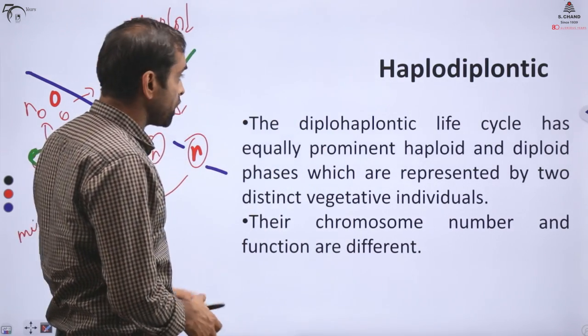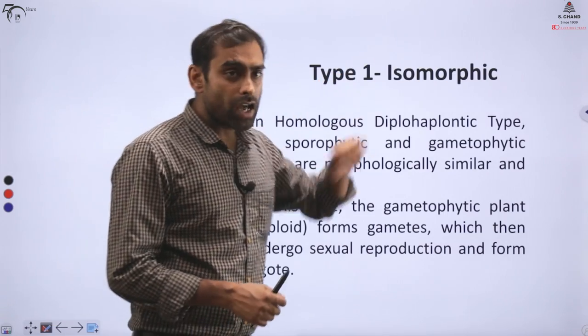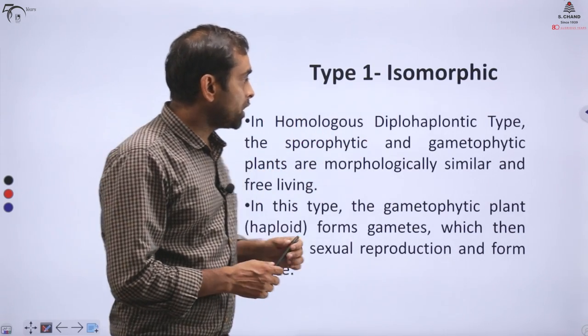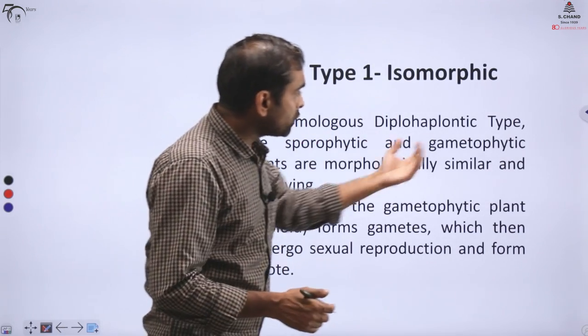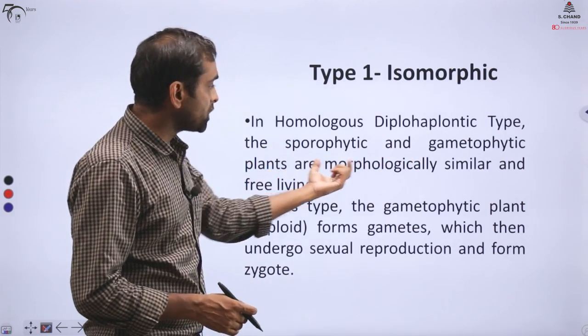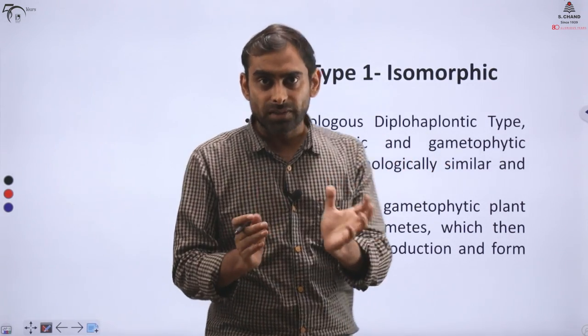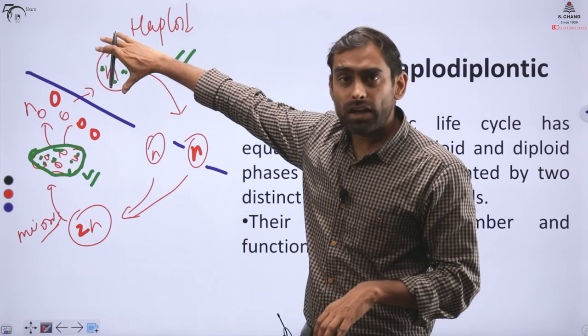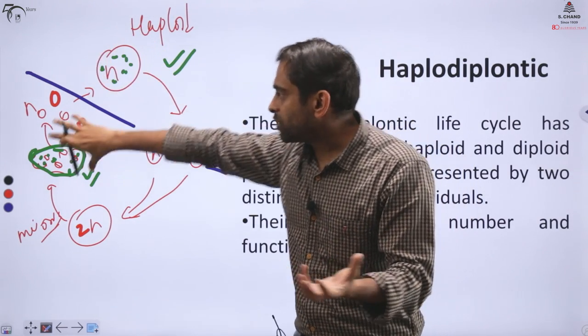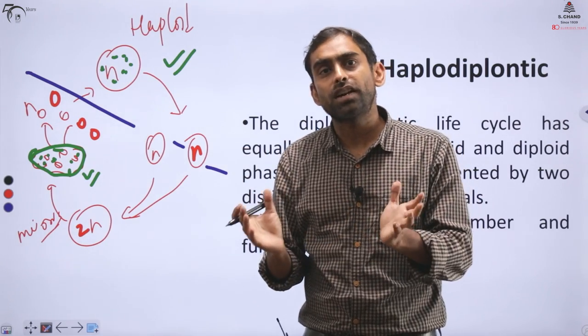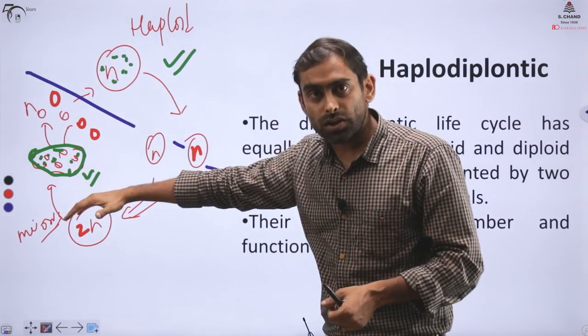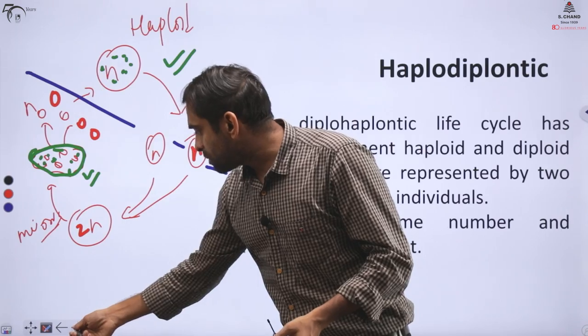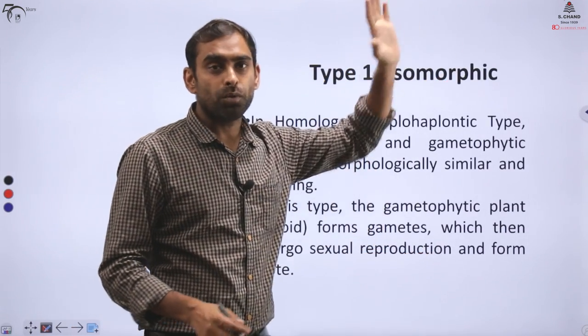So you will have gametophyte as an independent organism, and sporophyte as an independent organism. That is called haplodiplontic life forms. Now in haplodiplontic life forms, you can have two types. One is called isomorphic. Haplodiplontic can be isomorphic, which we also call homologous diplohaplontic. In this, the sporophytic and gametophytic plants are morphologically similar. Which means they have two life forms. Go back and check - this plant and this plant, when you see them visually, will look exactly the same, with no difference.